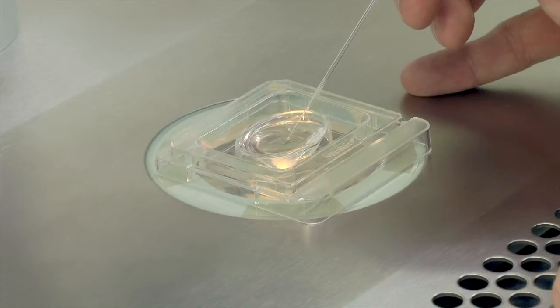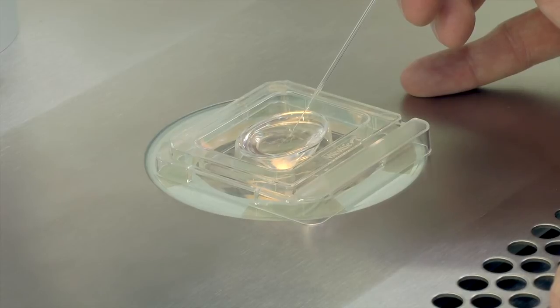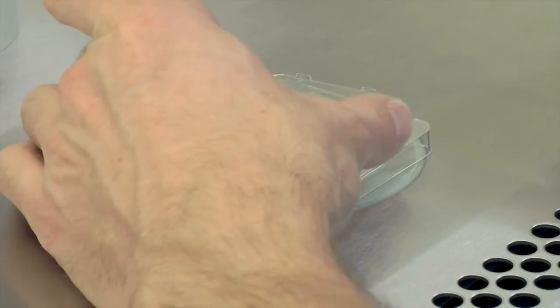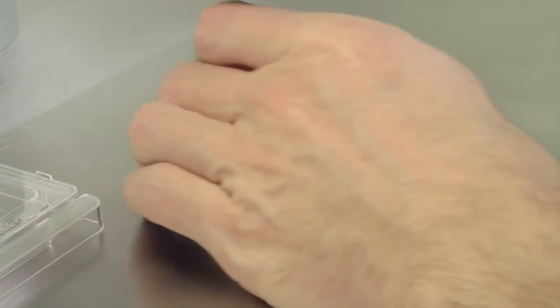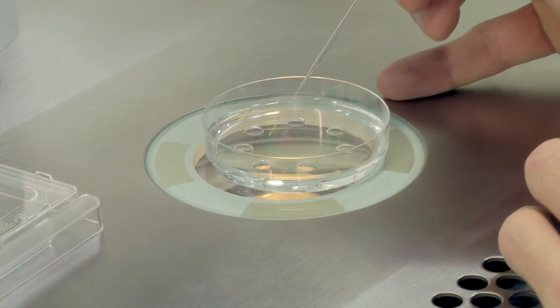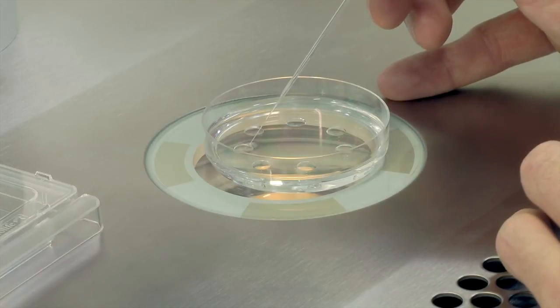At the time of fertilization check, denude the oocytes and assess them for fertilization in the GIVF Plus dish in which they were inseminated. However, if you know that this procedure will take longer than 2 minutes, we recommend that you use GMOPS Plus. This will allow for a much more stable environment for the zygotes and the oocytes to be assessed in. Remove the cumulus and the corona cells with a denudation pipette and assess them for fertilization at 37 degrees Celsius.